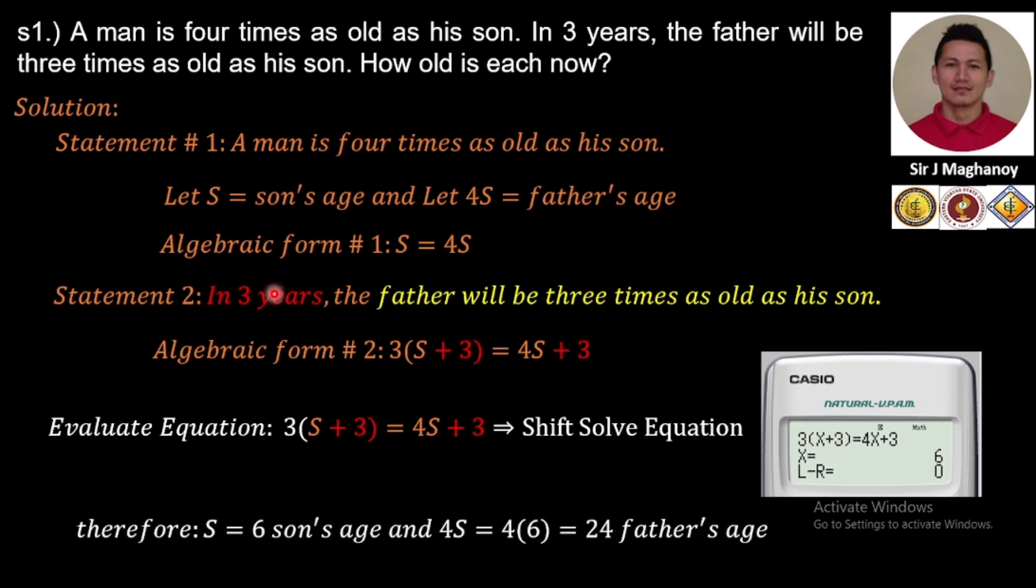Therefore, the son's age is 6 years old, and the father's age is 4 times S, which is 4 times 6, equals 24 years of age for the father.